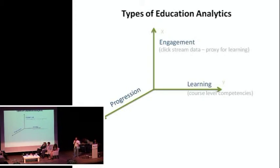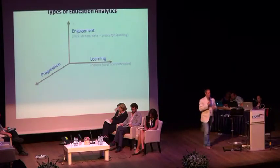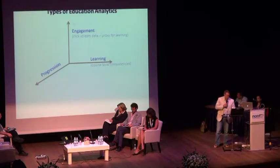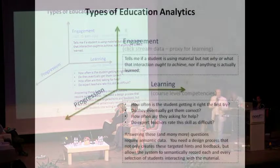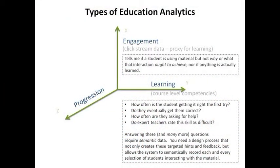As opposed to learning data, which are course-level outcomes and skills and competencies, the things a student is supposed to be able to do when they're finished with a course. So I think that clickstream data tells us if a student is using material, but not what they're doing with it, why that interaction, what it's supposed to achieve, and whether it was achieved or not.